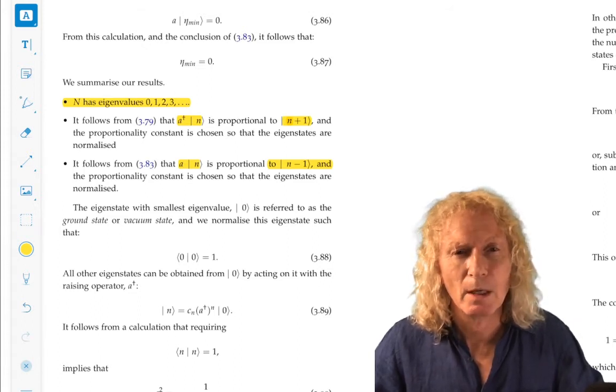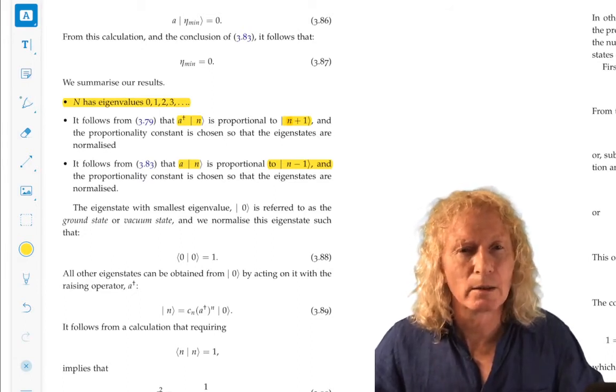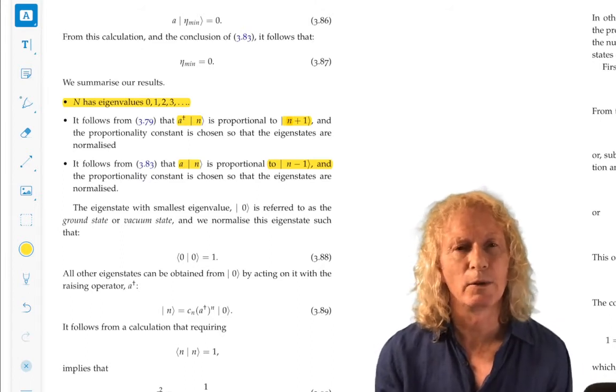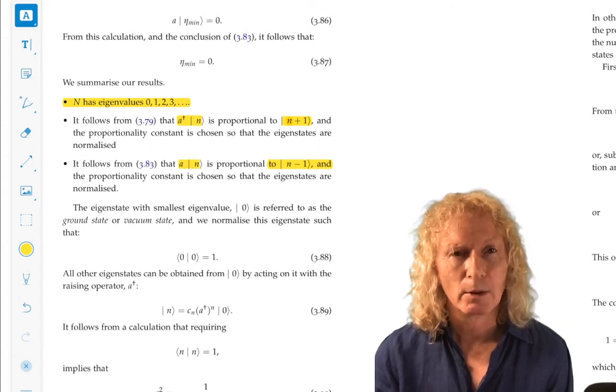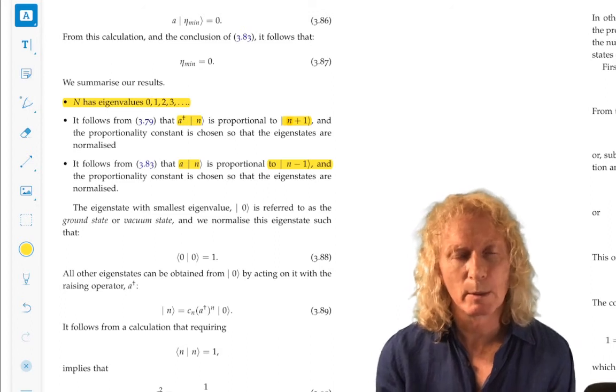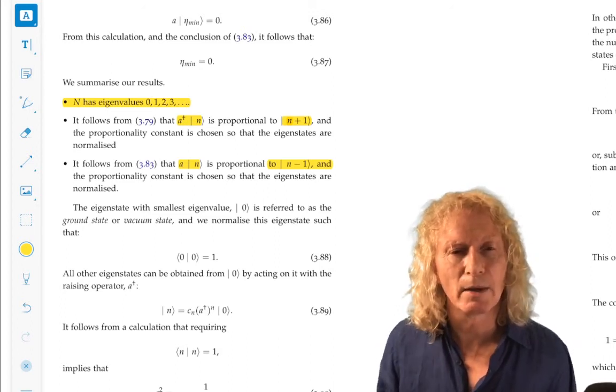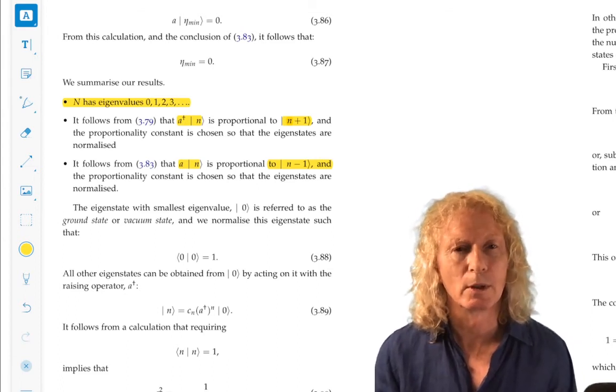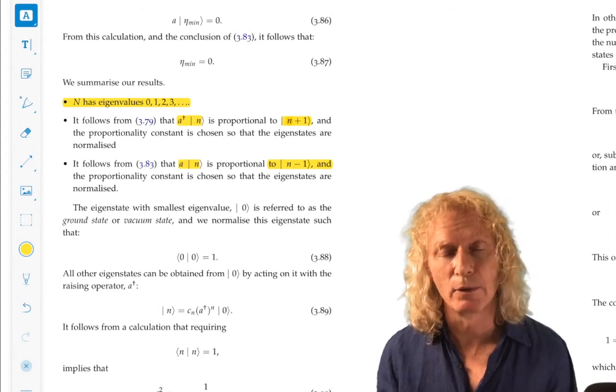So the classical harmonic oscillator had the Hamiltonian greater than or equal to zero, but it had a minimum of zero. The quantum harmonic oscillator never has zero energy. The minimum energy is h-bar omega over two. And then it has discrete jumps of energy from that point on.